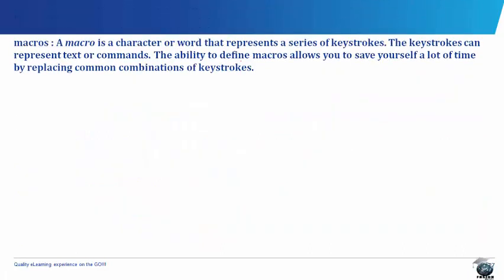Now let us look at other things. Macros — a macro is a character or word that represents a series of keystrokes. The keystrokes can represent text or commands. The ability to define macros allows you to save time by replacing common combinations of keystrokes. For example, when using Microsoft Word, instead of pressing Caps Lock and typing A, B, C, you can just hold the Shift key down and type A, B, C to get capital letters. That is macros.